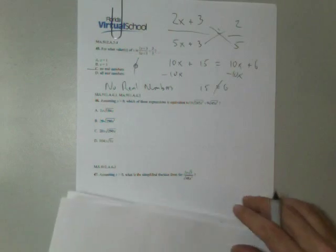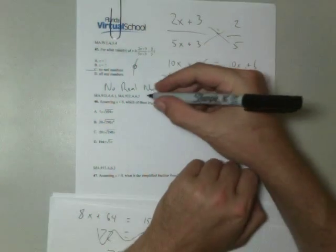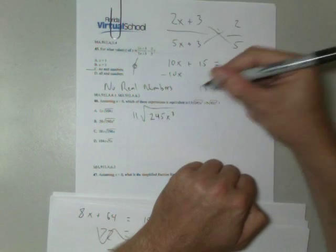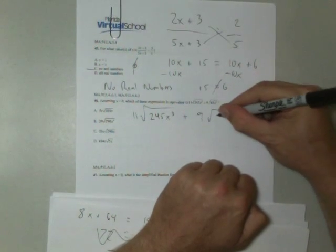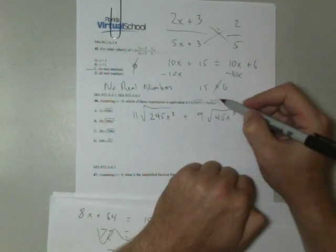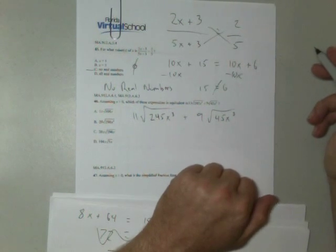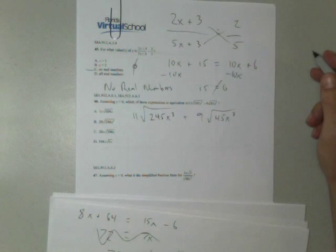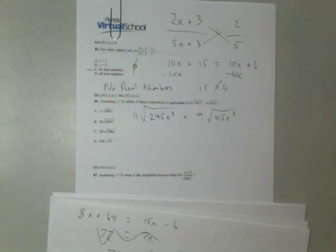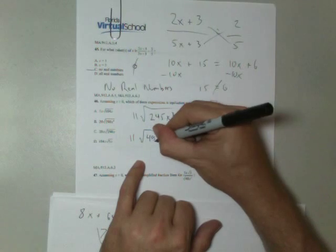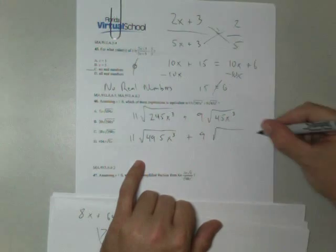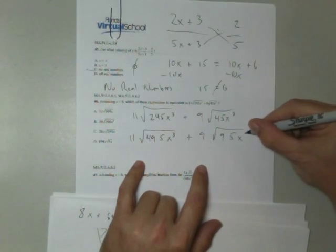Assuming x is greater than 0, which of these expressions is equal to 11√(245x³) + 9√(45x³)? If there are radicals on your test, if there is sort of any good news, it looks like there aren't cubed roots or higher roots than that. Okay, so let's see. 245 is 49 and 5. 45 is 9 times 5.